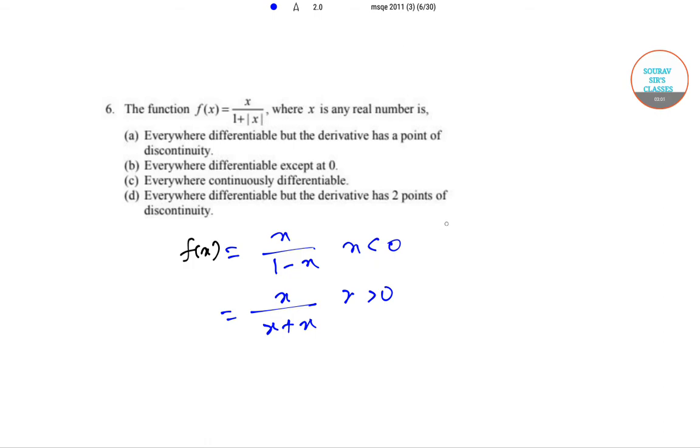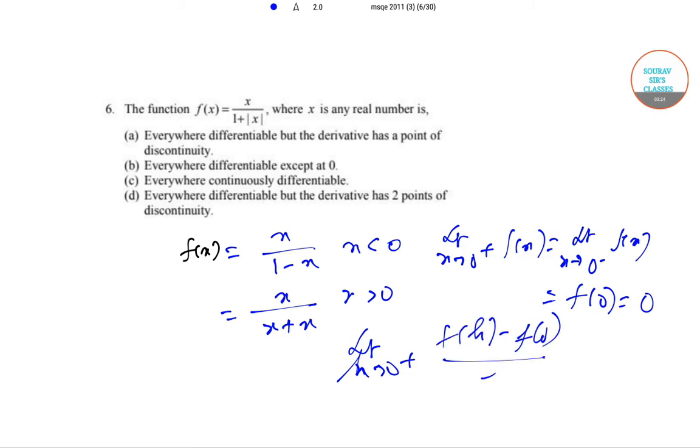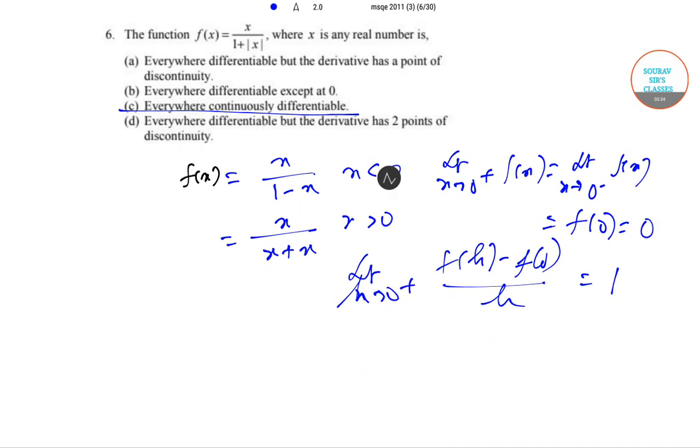If we just put the limit of f(x) into this, so limit x tends to 0 plus f(x), limit x tends to 0 minus f(x) equals f(0) which is 0. And in the second part, limit h tends to 0 plus, so this is (f(h)-f(0))/h, so that is also 1. So f(x) is continuous and differentiable everywhere in the given structure, so the option is C.